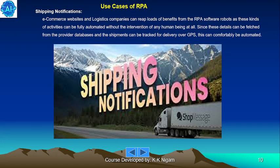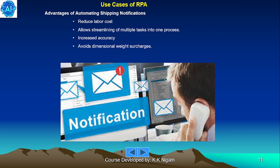Shipping notifications: e-commerce websites and logistics companies can benefit greatly from RPA software robots, as these activities can be fully automated without any human intervention. Details can be fetched from provider databases and shipments tracked for delivery over GPS. Advantages of automating shipping notifications include reduced labor costs, streamlining of multiple tasks into one purpose, increased accuracy, and avoiding dimensional weight surcharges.